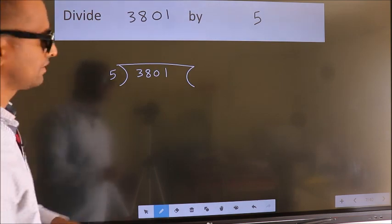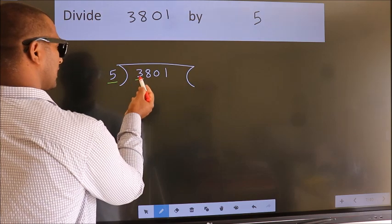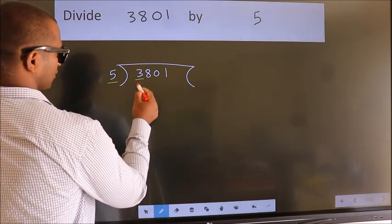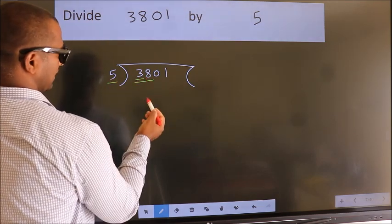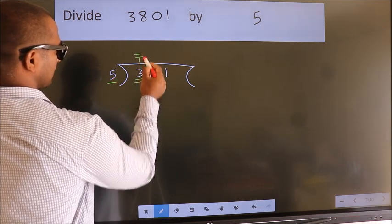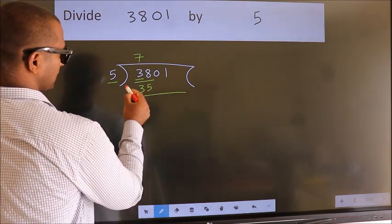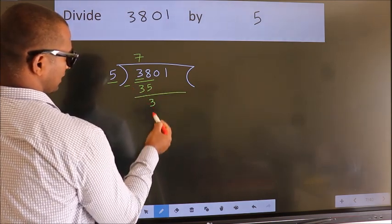Next. Here we have 3. Here 5. 3 smaller than 5. So we should take two numbers, 38. A number close to 38 in 5 table is 5 times 7 is 35. Now we should subtract. We get 3.